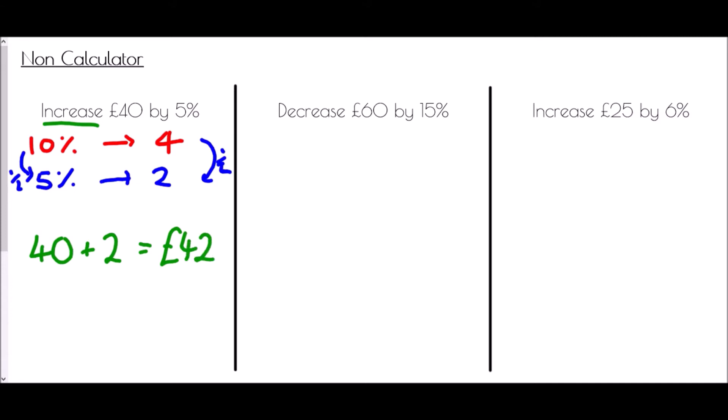Next we're asked to decrease £60 by 15%. Again, the first thing I need to do is find 15%, so I begin with 10%. 10% this time is £60 divided by 10, which is £6.